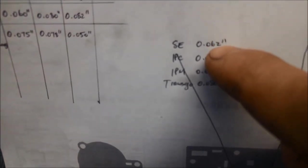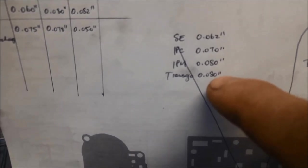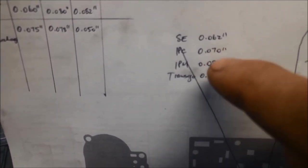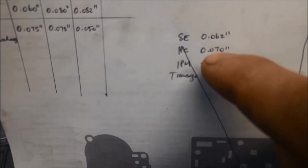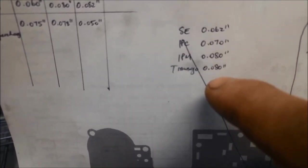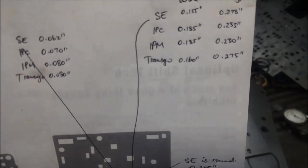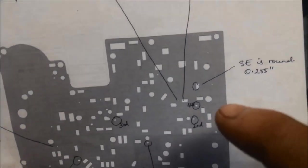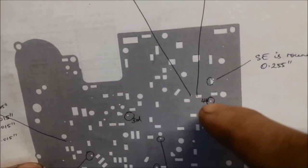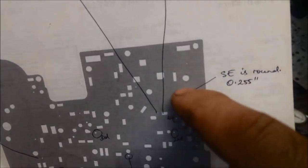The SE is the vehicle that we've got, 62,000. And then you've got the IPC is the one that we've got now, that we've already drilled it out, 70,000. The IPM and the TransGo 80,000 there. Then over here, on our one, we've actually got a round hole there. The SE is a round hole, 255,000, there.